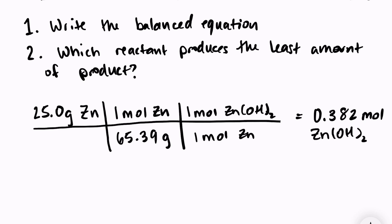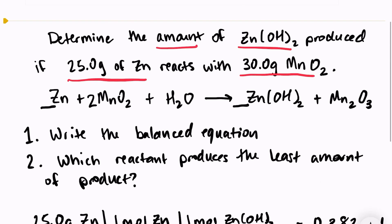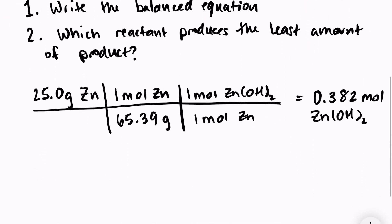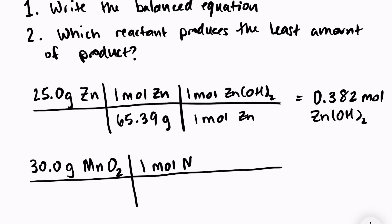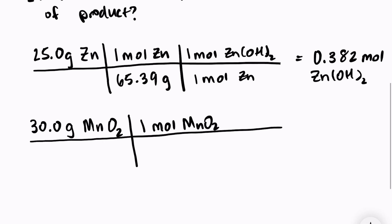We're going to do the same thing for manganese oxide. So I have 30 grams, 30.0 grams MnO2. And the first step is to convert into moles. One mole MnO2 over...